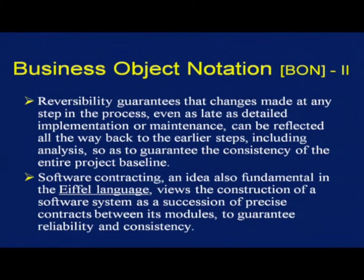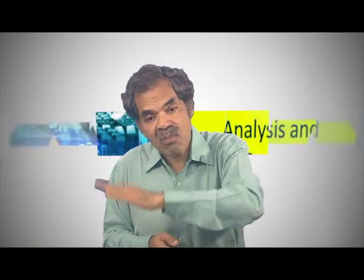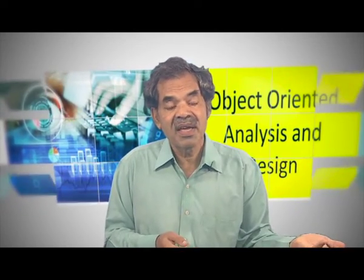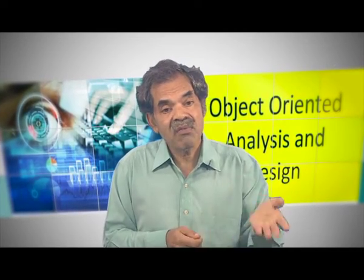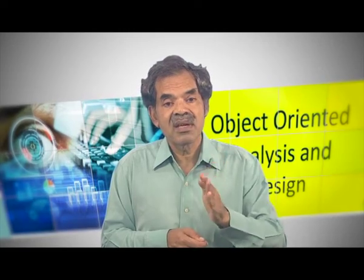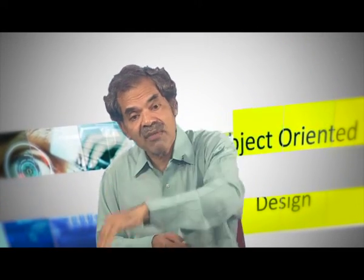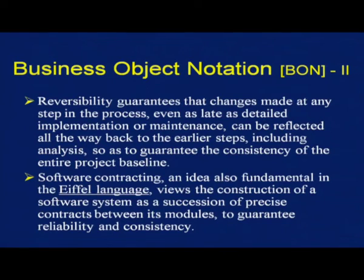Reversibility guarantees that changes made at any step in the process — even as late as detailed implementation or maintenance — can be reflected all the way back. It is a dream of many people who started doing two-way traceability. Tracing from top-down to bottom-up takes books to talk about, but tracing from bottom to top — reversibility, the two-way traceability — remains a very stiff challenge in the practice of software engineering. But we want to do that; it is worth it.